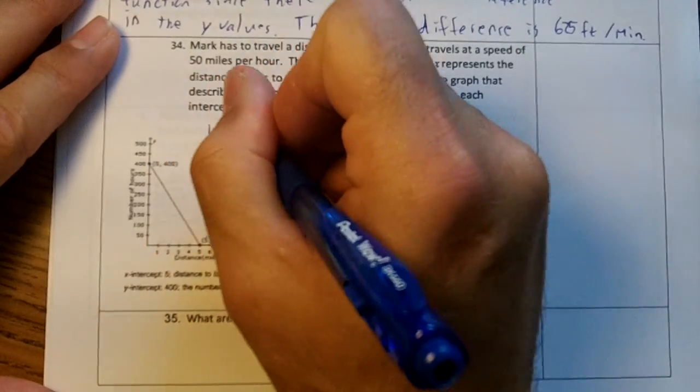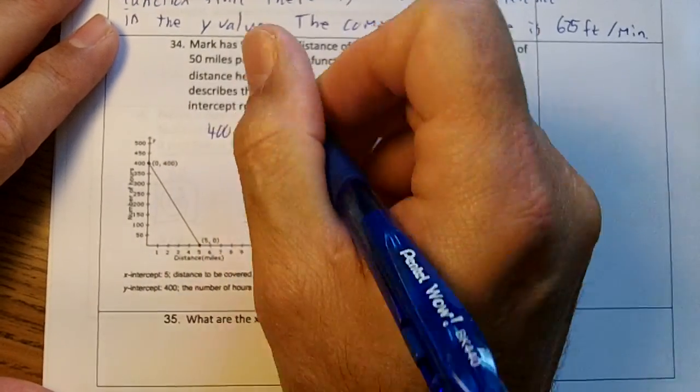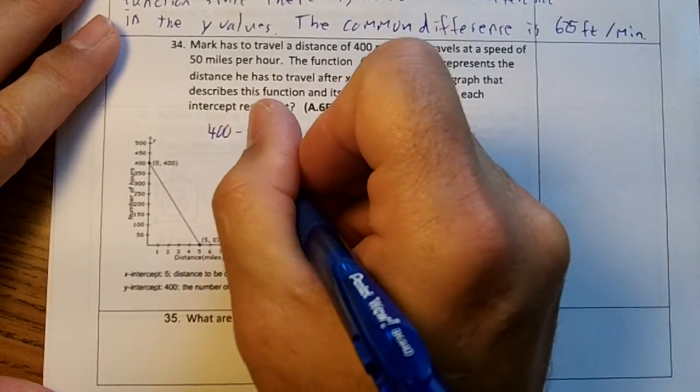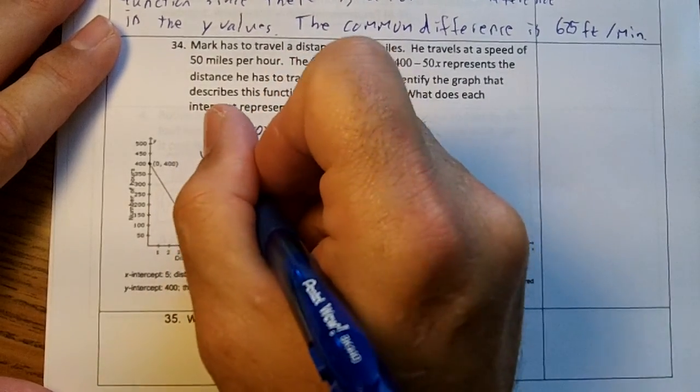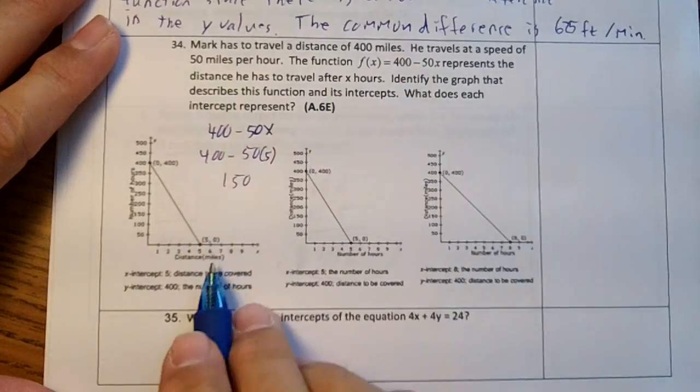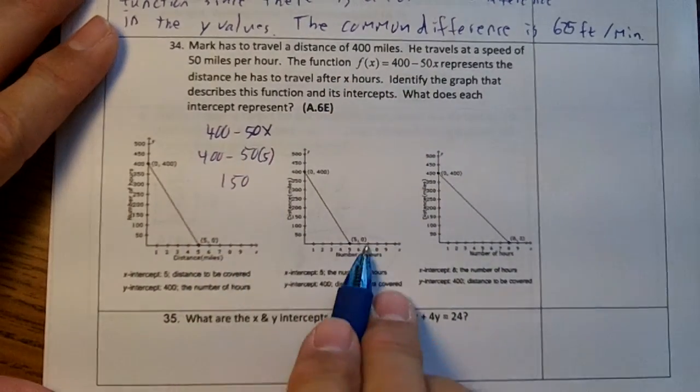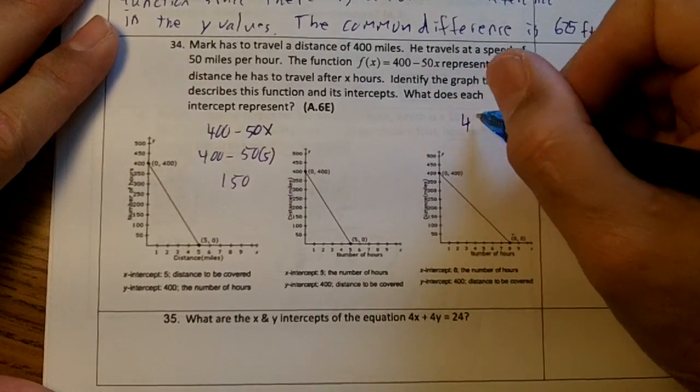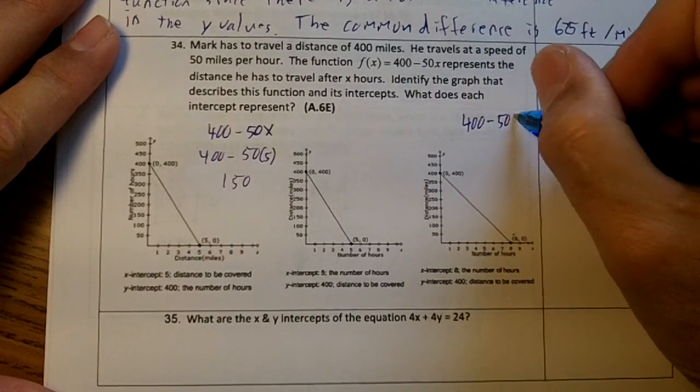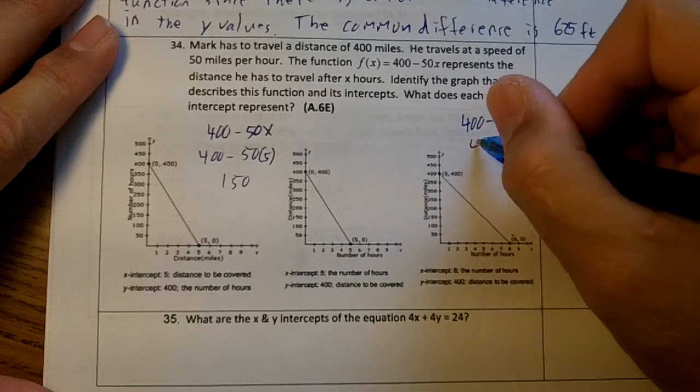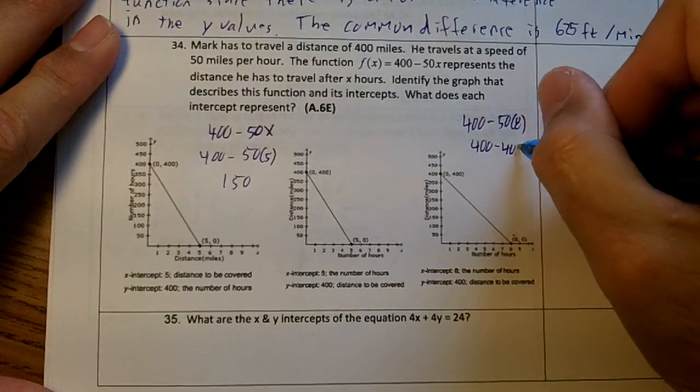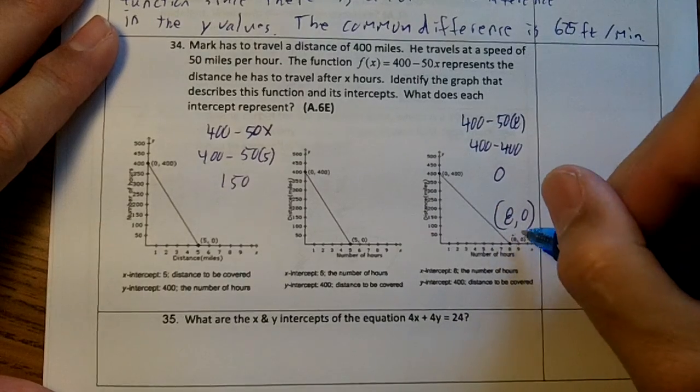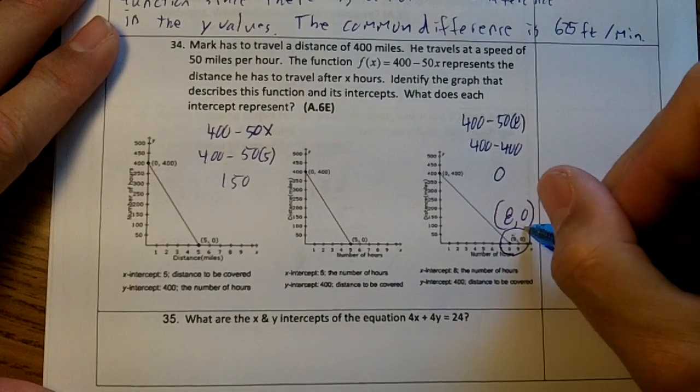So if we have 400 minus 50x, if you input 5, you get 150. That's not 0, is it? So the 5, 0 won't work. Right here, if you input 8, you get 400 minus 400, which would be 0, right? So an input of 8 is an output of 0. So this right here is our x-intercept.